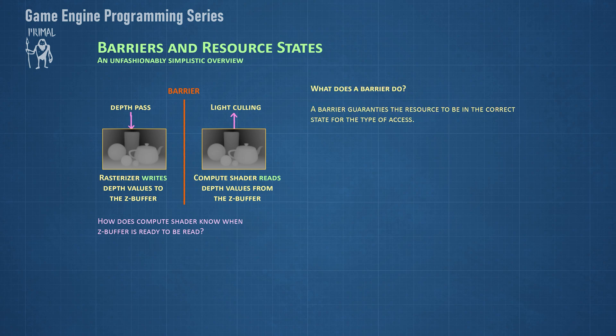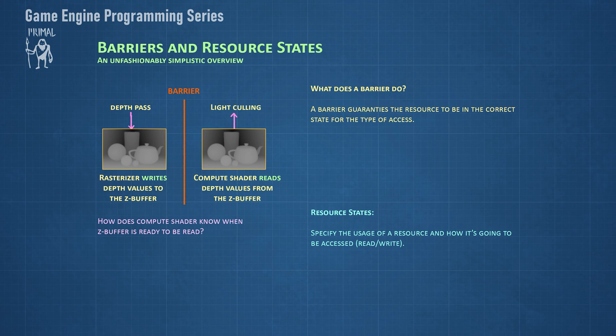So what do barriers do? Conceptually, you can think of a barrier as something that ensures a resource is in a correct state before it's accessed for the intended usage. In the example of depth pass and light culling, the barrier prevents reading from the buffer resource while it's still being written to. In reality there's much more going on — for instance, the memory layout of the resource could change to optimize access for different usages, or even the entire pipeline could get flushed.